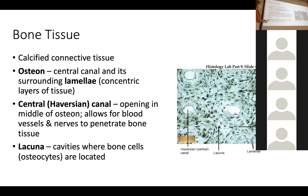Those are the main terms you need to know right now for bone tissue. A bone bruise would probably involve the central canal because that's where the blood vessel is — the blood vessel would rupture to create the bruise. Good question.